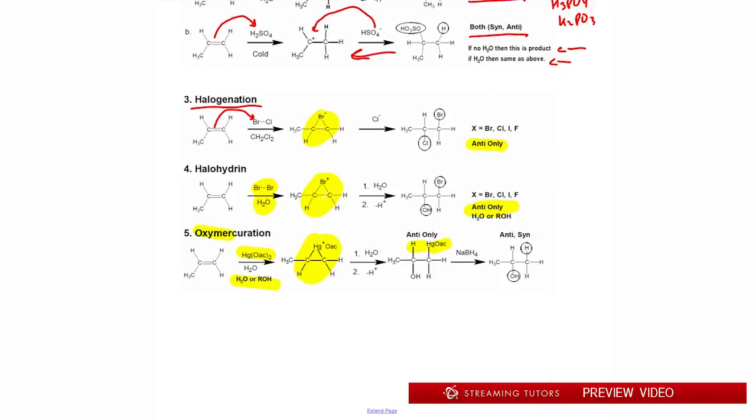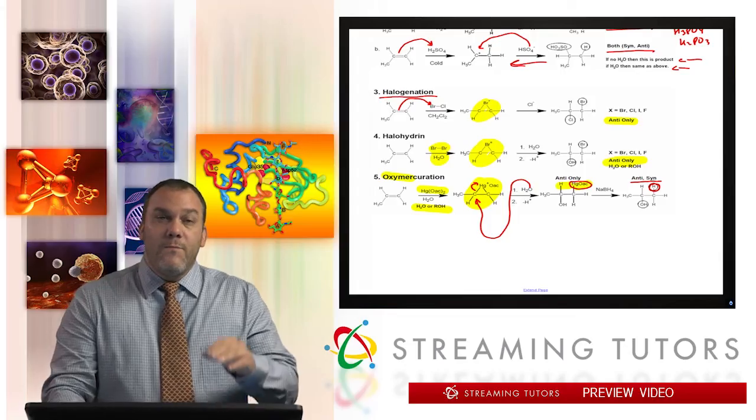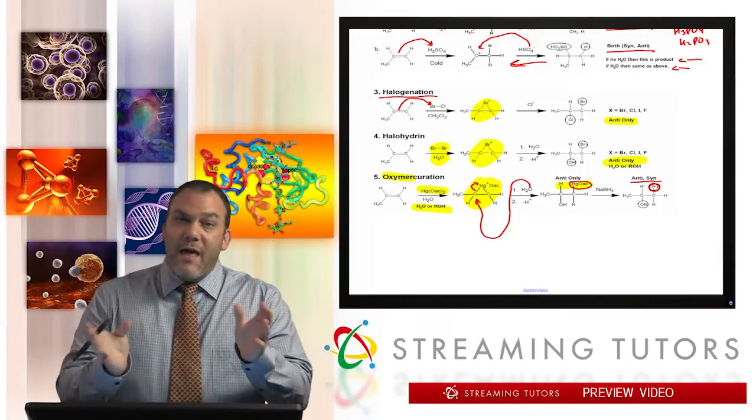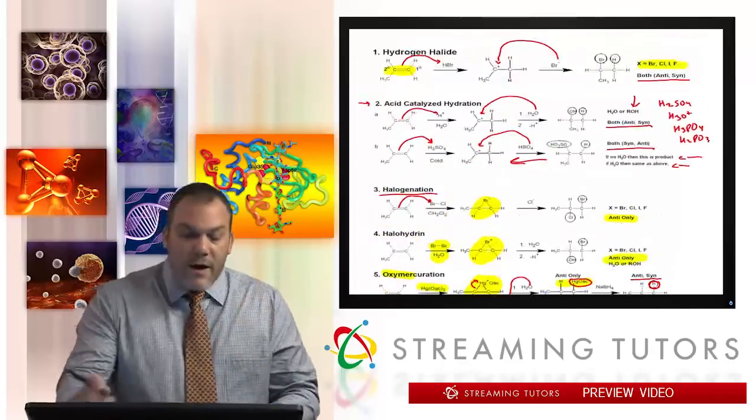Oxymercuration is where we have mercuric acetate, Hg(OAc)2. The mercury comes in and makes a triangle and then water comes in after, or alcohol. It could be water or alcohol and you get the anti only. When this water comes in it comes in anti higher degree, the first group goes to the lower degree at the end of the reaction and the second group goes to the higher degree. But when it comes in it's anti. Once it opens up now it's not anti, so when this mercury is replaced with NaBH4 to get an H, that H can come in either anti or syn. The step that's anti is when the mercury is making the triangle, but after that it could be anti or syn.